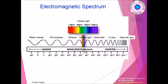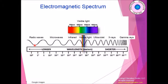The electromagnetic spectrum is based on different wavelengths of different waves, starting from radio waves all the way to gamma rays. Radio waves have a longer wavelength compared to gamma rays, which have a shorter wavelength. If you see the two troughs of radio waves, there's a larger size, whereas gamma rays have very short wavelengths.